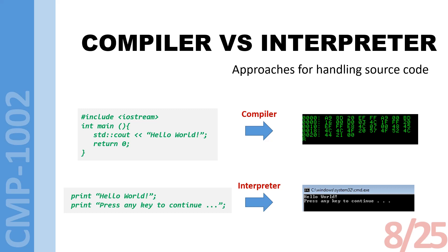For example, when an interpreter encounters 'print hello world', it converts only that command into machine code and executes it, then moves to the next command. The compiler-based solution takes the whole program, weeds out unnecessary parts, and finds the ideal way of converting it to machine code. It can identify inefficiencies and remove them. So if you are aiming for efficiency, a compiler is a great choice — it generally produces very efficient machine code based on its configuration.